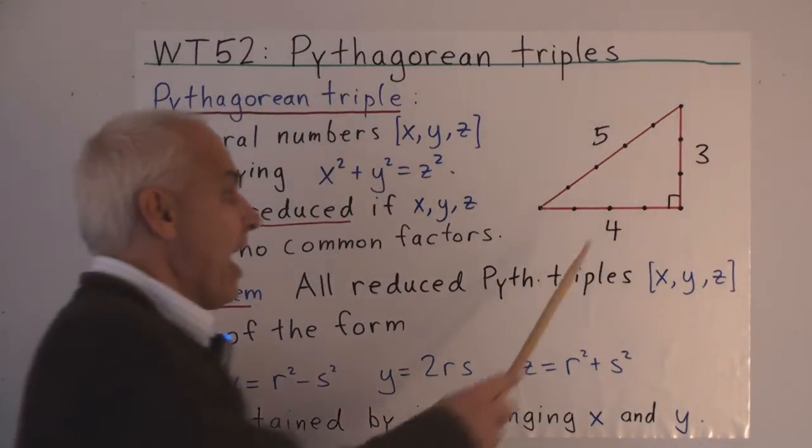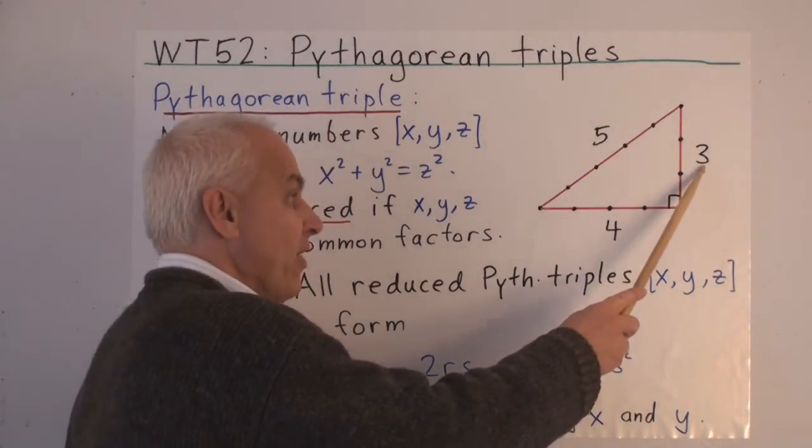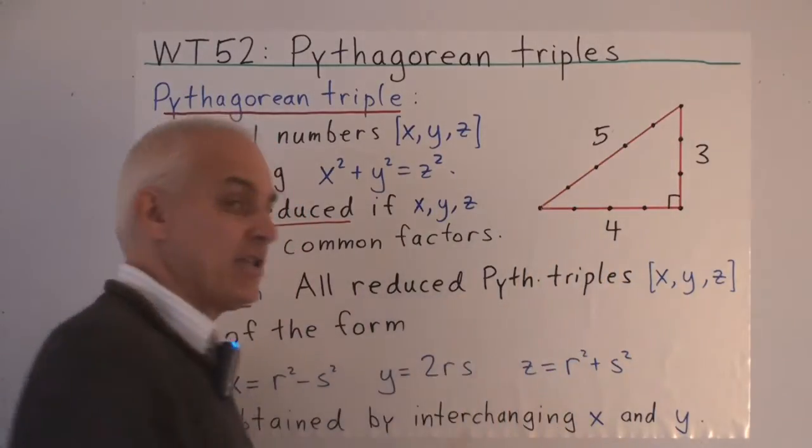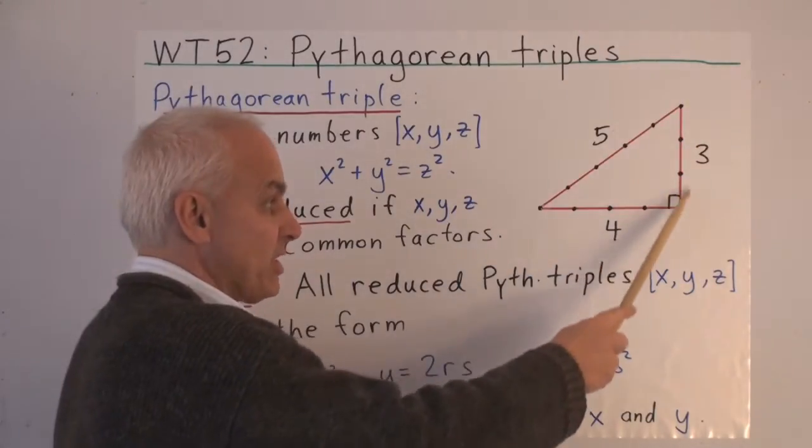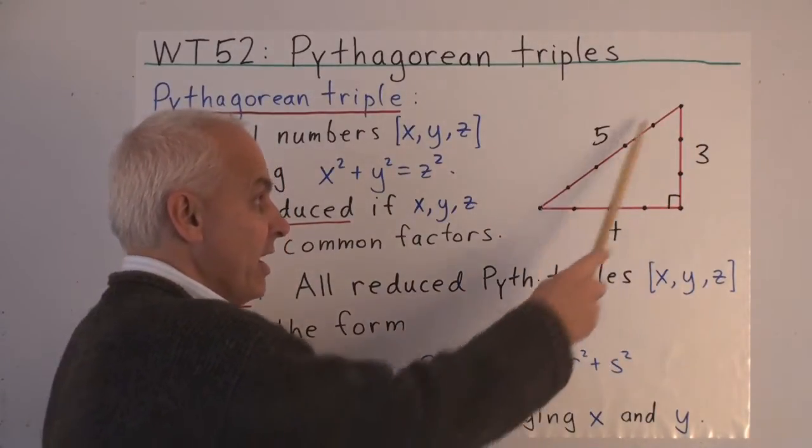So the question is, how can we find triangles that have this property that their sides are essentially integers and that they satisfy Pythagoras' theorem, which in this case would be 3²+4²=5².